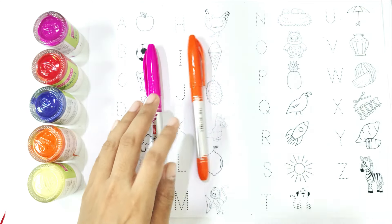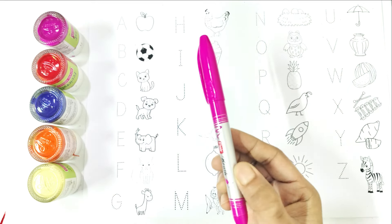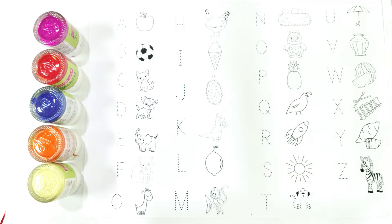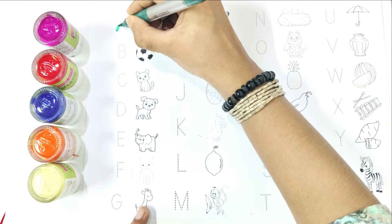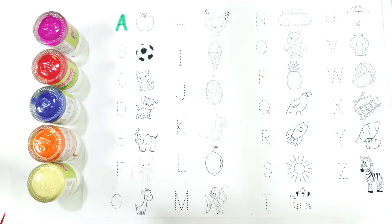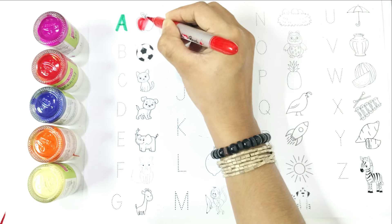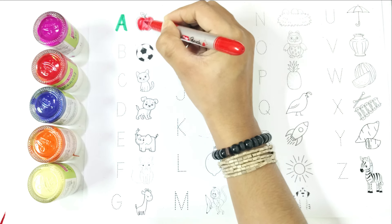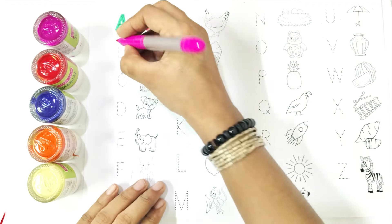Orange, pink. Write with me. A — A is for apple. Again, say with me: A is for apple.